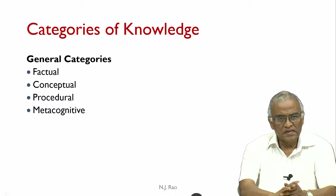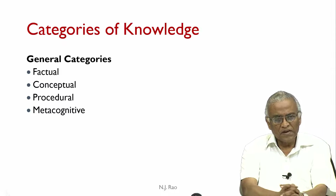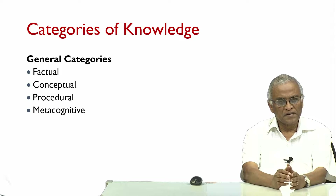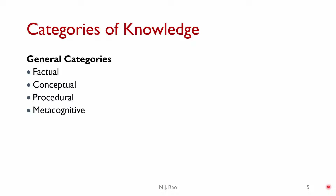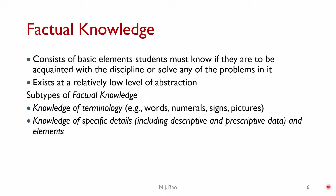There are four categories of knowledge applicable across all disciplines including all professional programs. These four categories are: factual, conceptual, procedural, and metacognitive. Factual knowledge is fairly simple to understand — it consists of basic elements students must know if they are to be acquainted with a discipline or solve problems in it, and it exists at a relatively low level of abstraction.